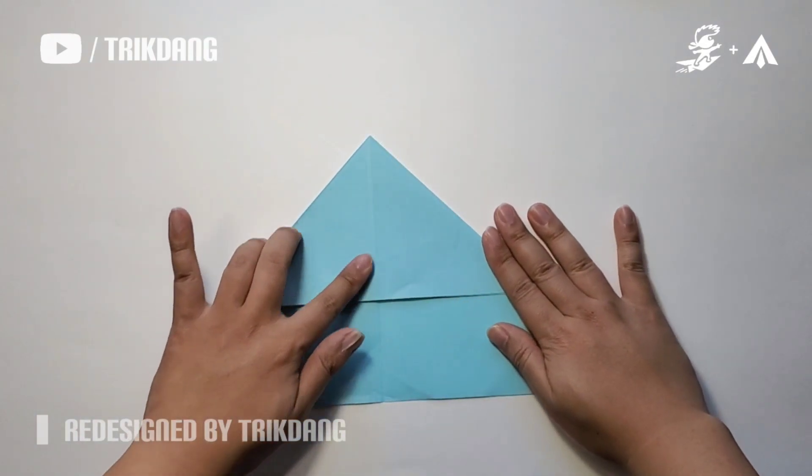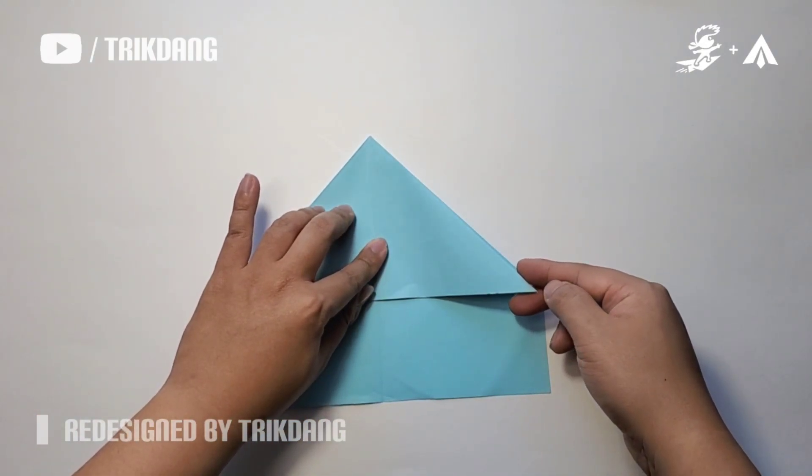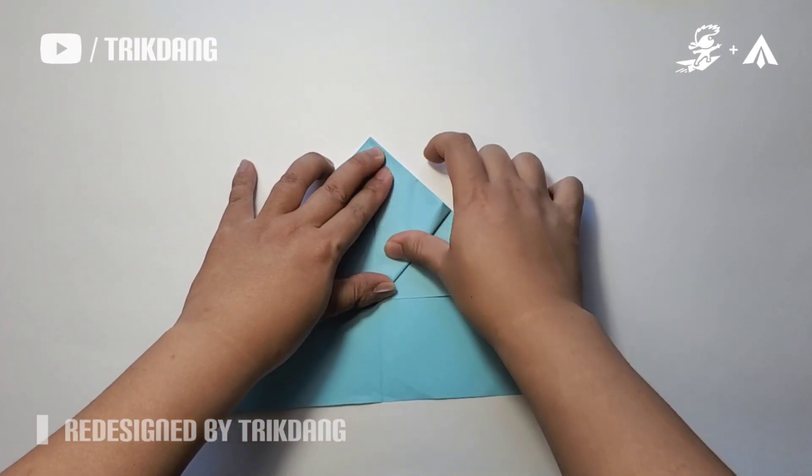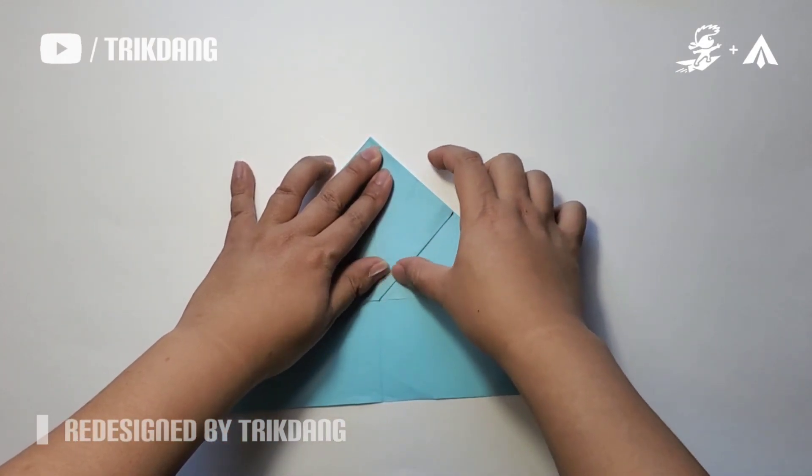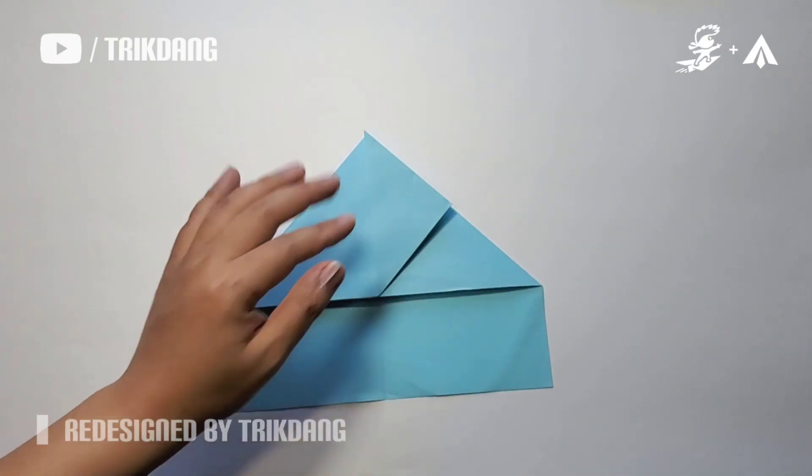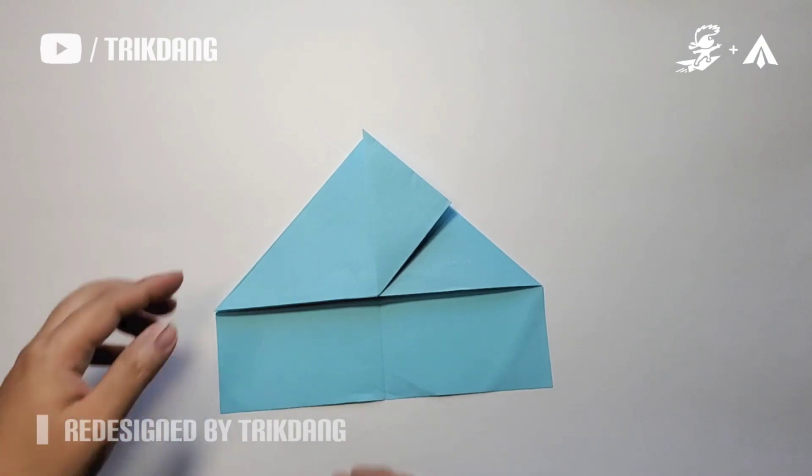Very simple. Next, let's start from this part of the paper, fold straight up here. Repeat the same fold for the opposite side.